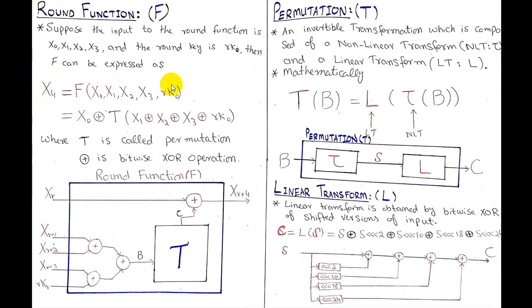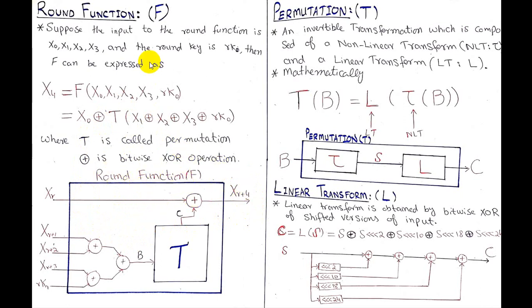To summarize the round function: four inputs (x1, x2, x3, rk) are XORed together and passed to the T permutation. T generates output C, and C is bitwise XORed with x0 to generate x of r+4. This is the complete round function, generating one new x value per round.